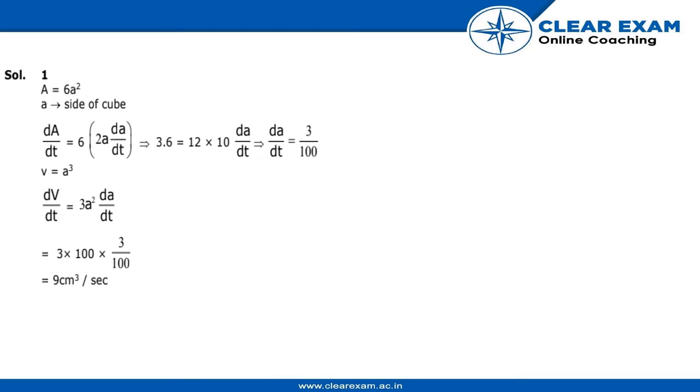Area of the cube is 6a². We have to find the rate of change of area, so dA/dt would be 6 times 2a da/dt. That would be 3.6 equals 12 times 10 da/dt.